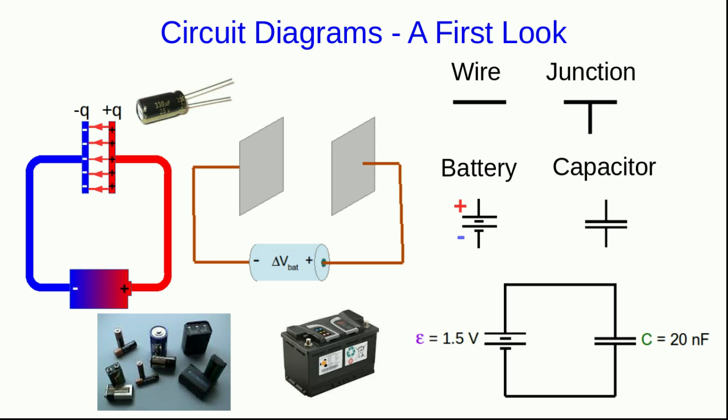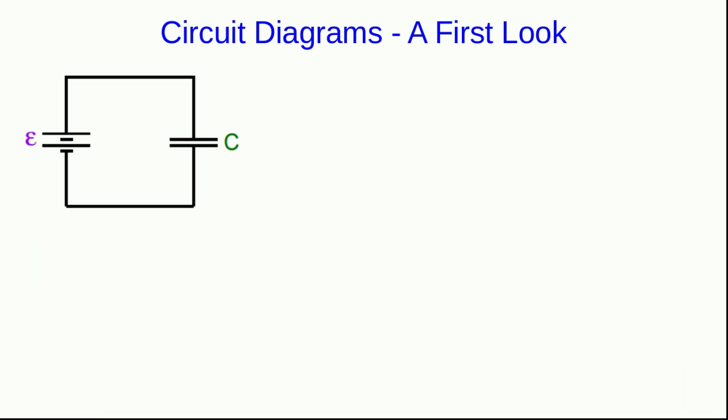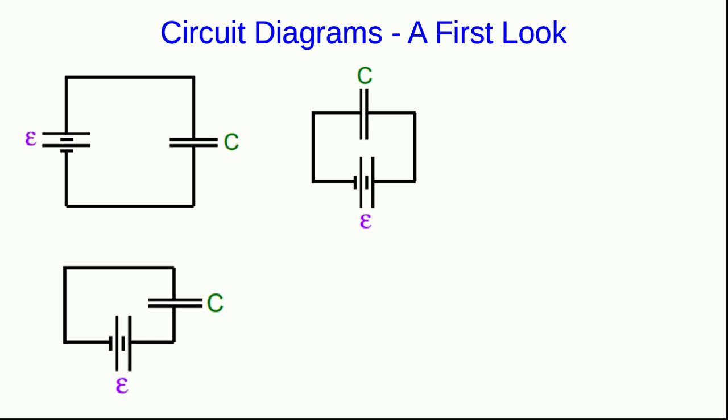A very important thing to realize about circuit diagrams is that only certain details matter. So I've drawn this circuit diagram this way. But I could have drawn it this way, and it's showing exactly the same circuit. Or this way. Or in some overly, unnecessarily complicated way like this. What matters in a circuit diagram is connectivity. What is connected to what. And all of these diagrams are showing that the positive terminal of the battery is connected to one plate of the capacitor, while the negative terminal is connected to the other plate. And they are connected by nothing more than wire.